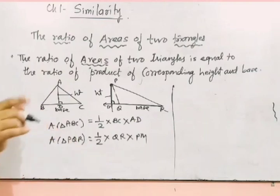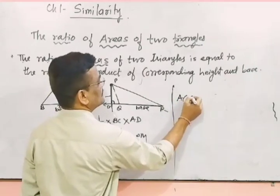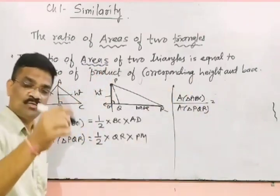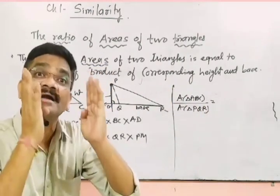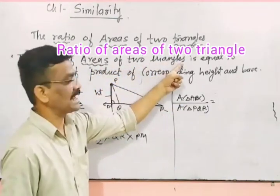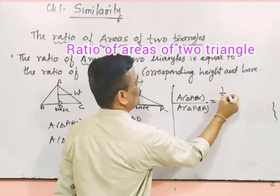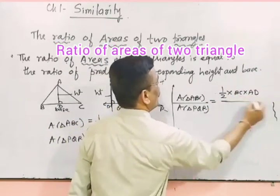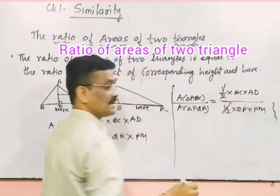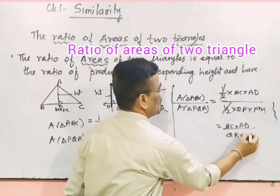Now, can we have another statement? The ratio of, ratio means upon. Area of triangle ABC upon area of triangle PQR is equal to two triangle area ratio. So triangle ABC ka area kya aya? Half into base into height upon half into base into height. Half half cancel. What will remain? BC into AD upon QR into PM.